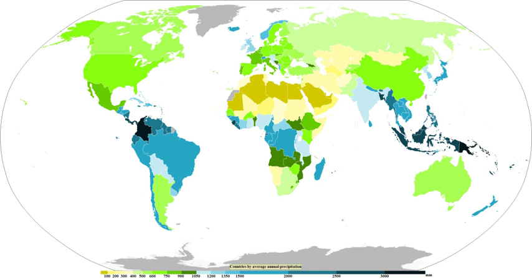The Köppen classification depends on average monthly values of temperature and precipitation. The most commonly used form has five primary types labeled A through E. The primary types are A – tropical, B – dry, C – mild mid-latitude, D – cold mid-latitude, and E – polar.